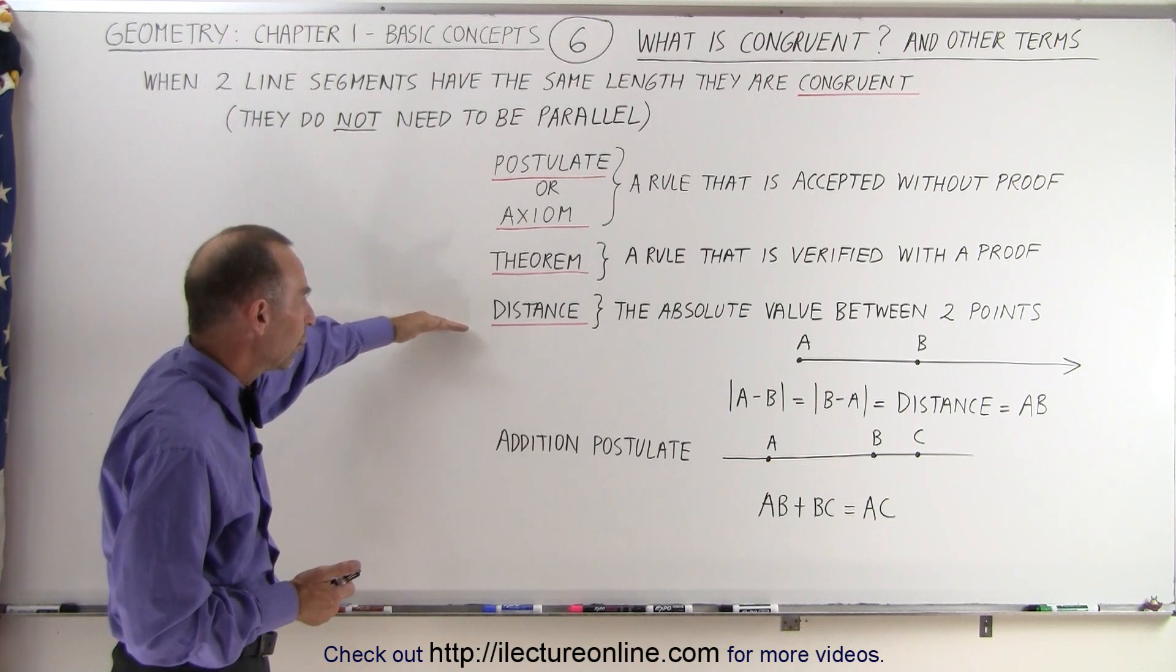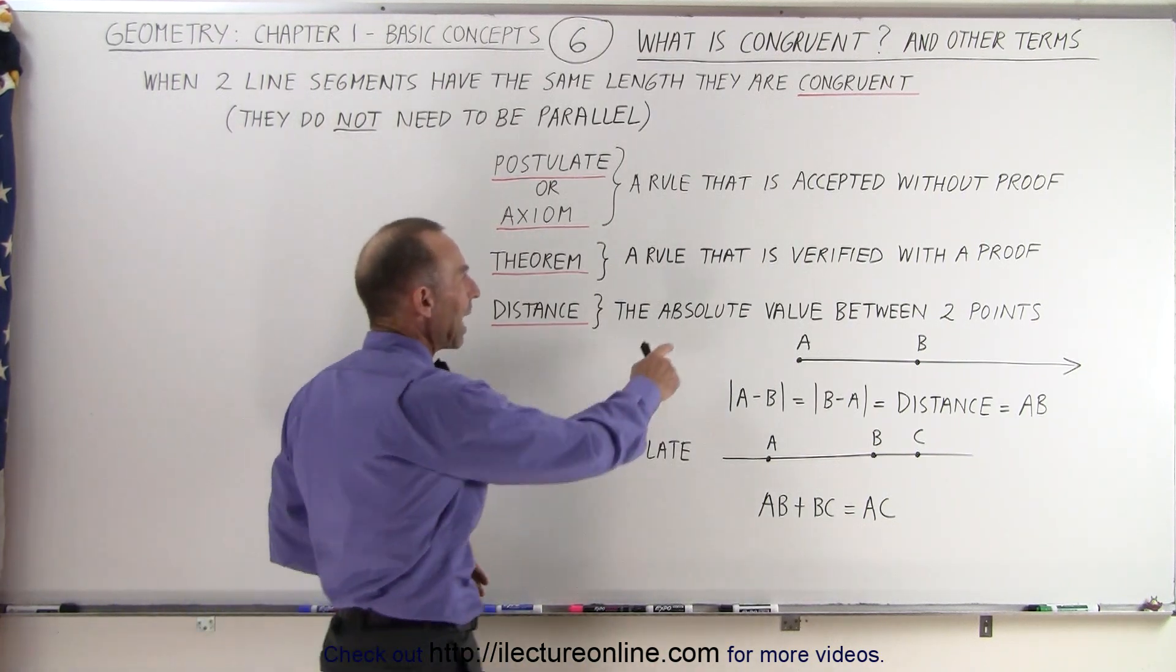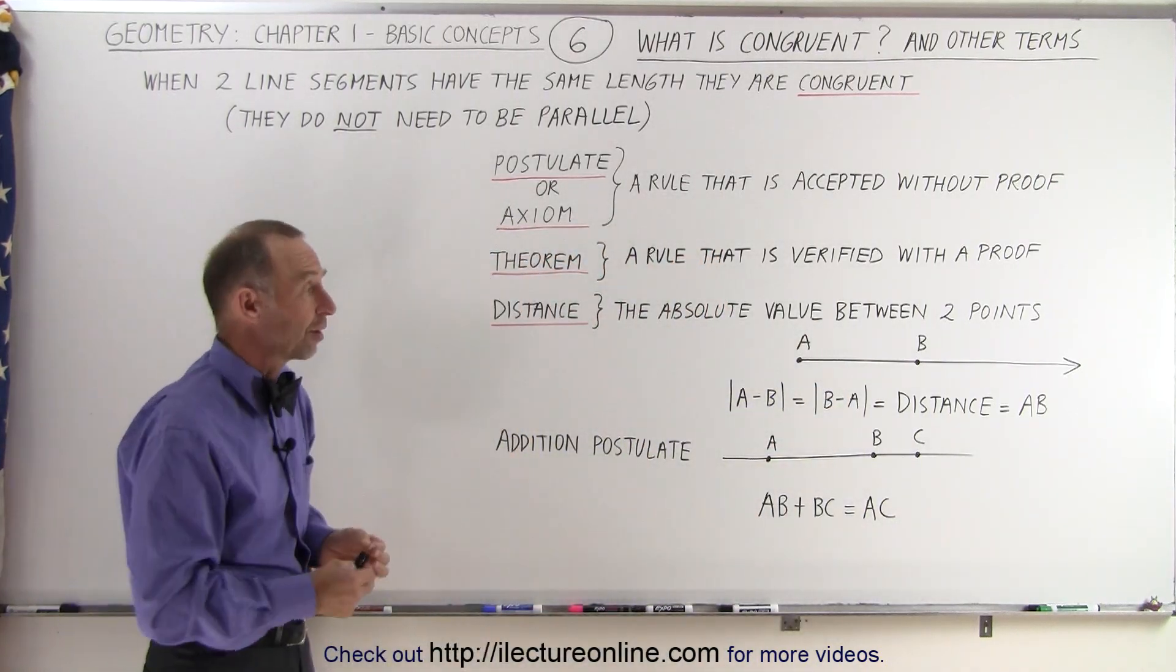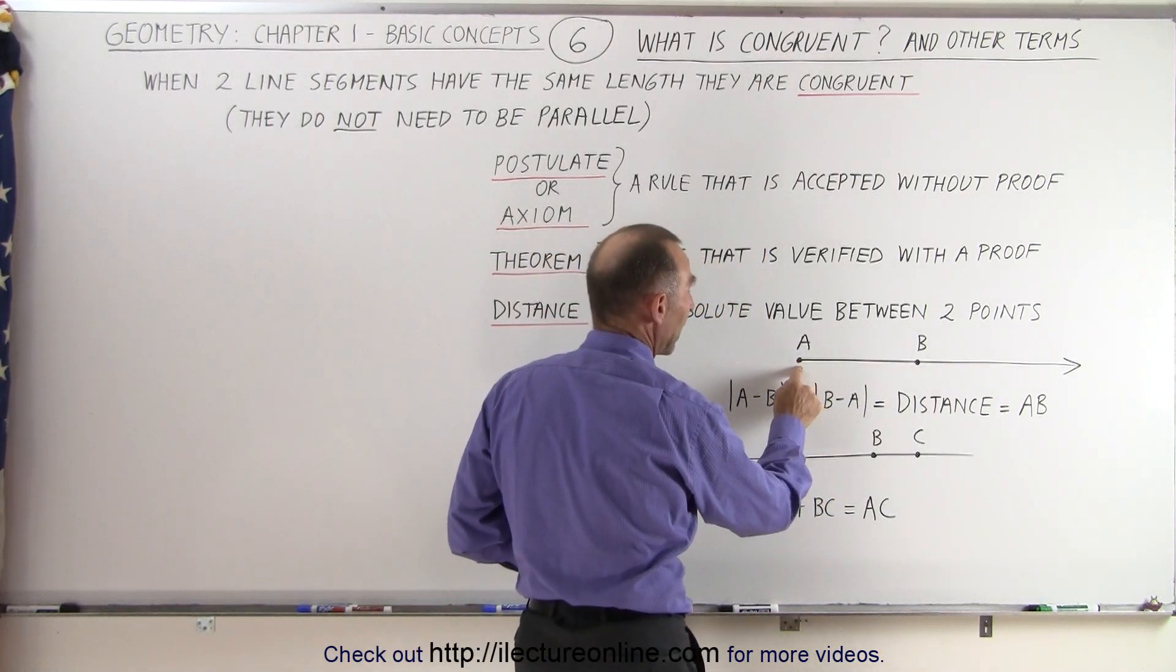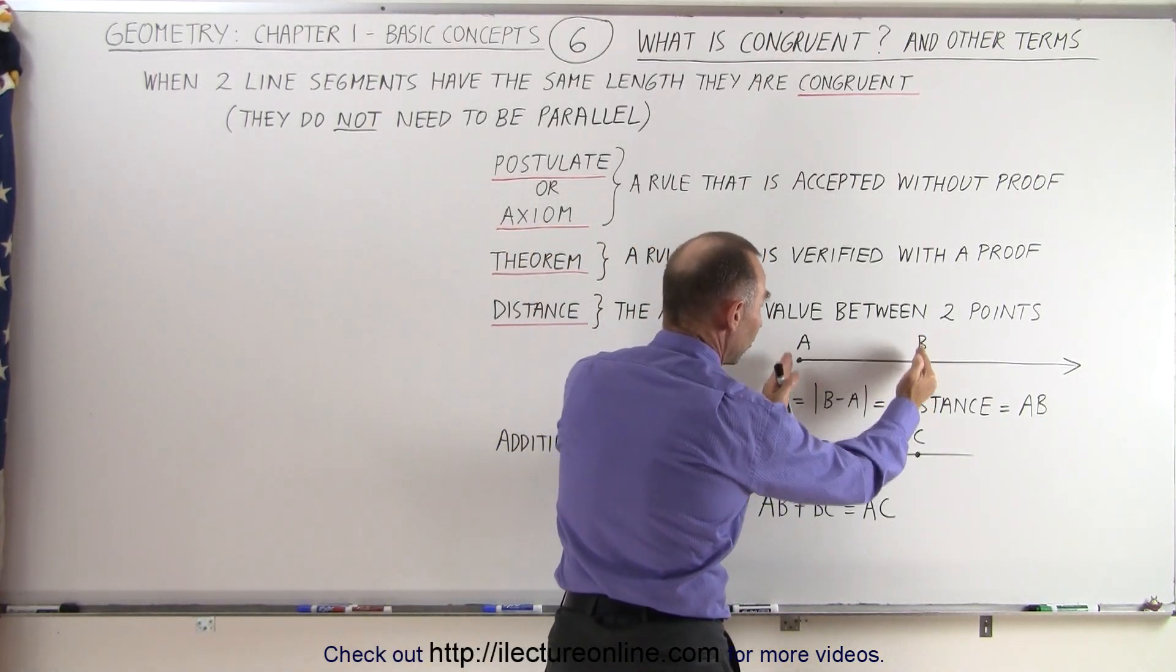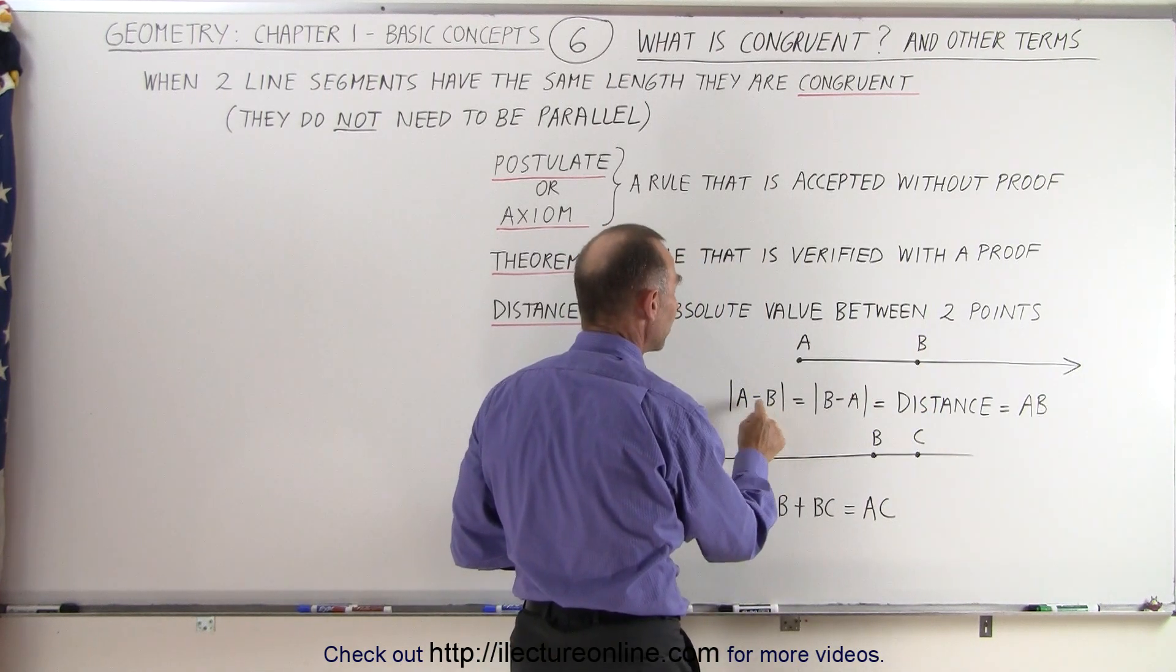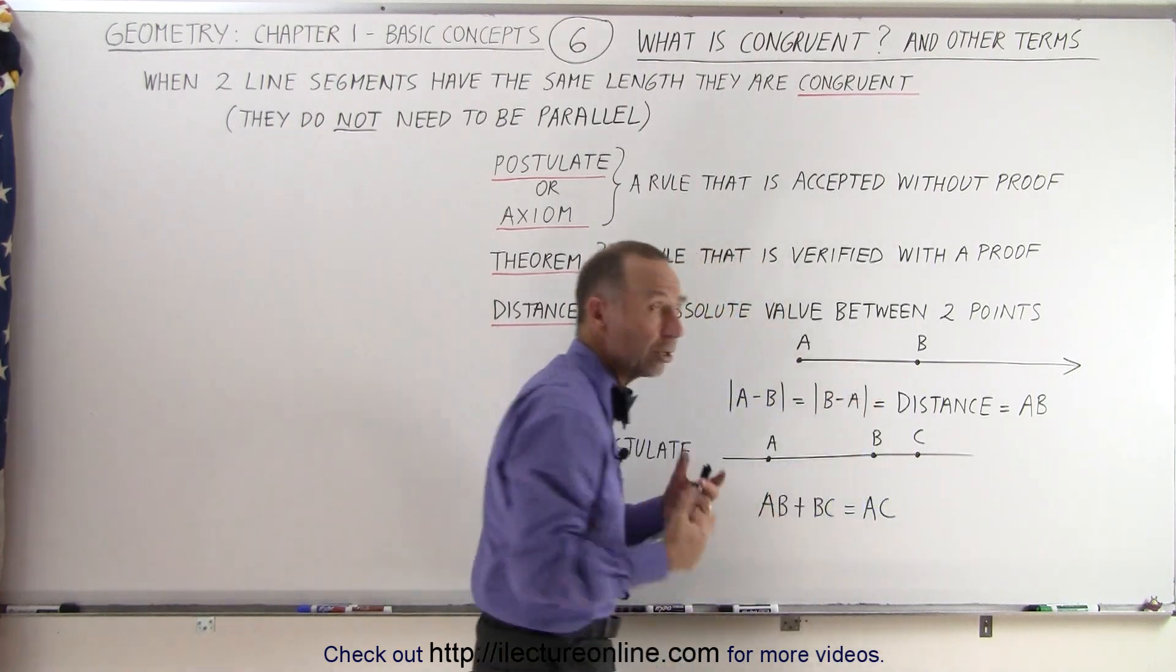And then we have the word distance. In geometry the distance is the absolute value between two points, two points on a line for example. Let's say we have a ray here, we have the point A, the point B, the distance between them is defined as A minus B, the value for A minus the value for B if this was, for example, on a number line.